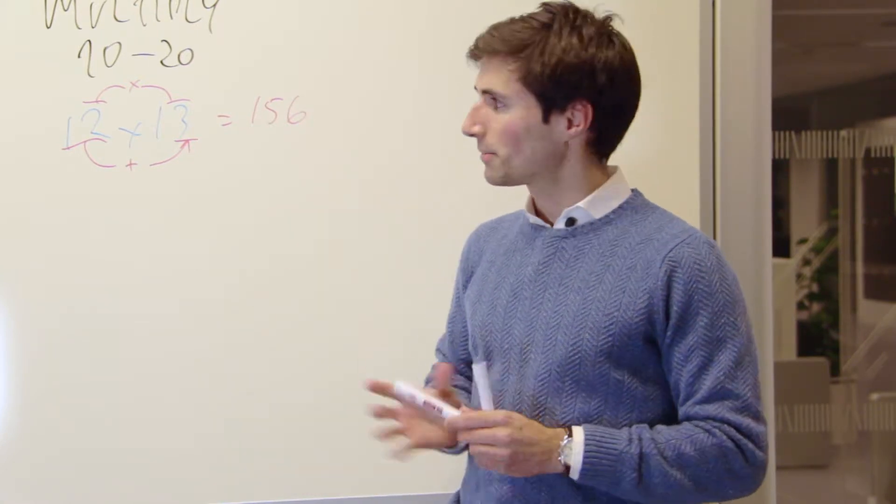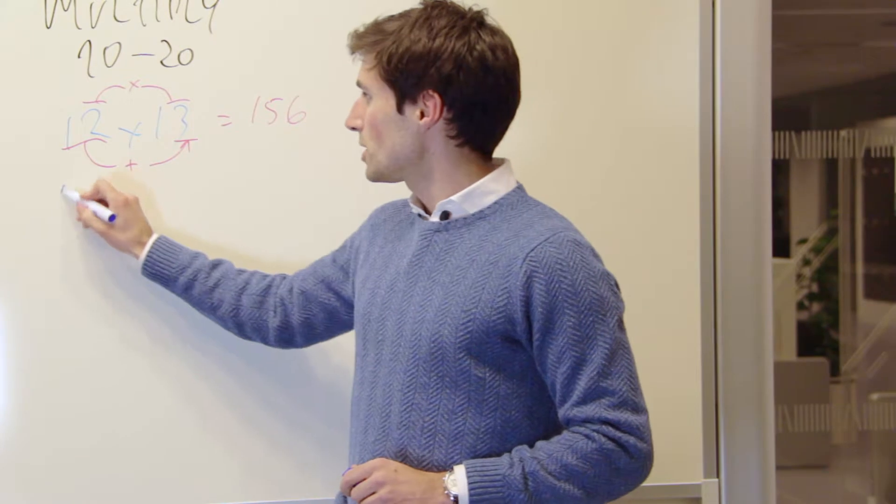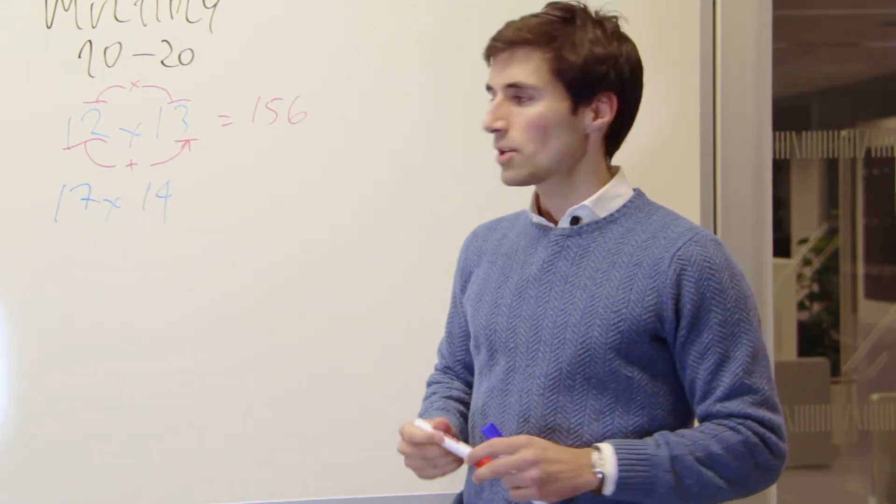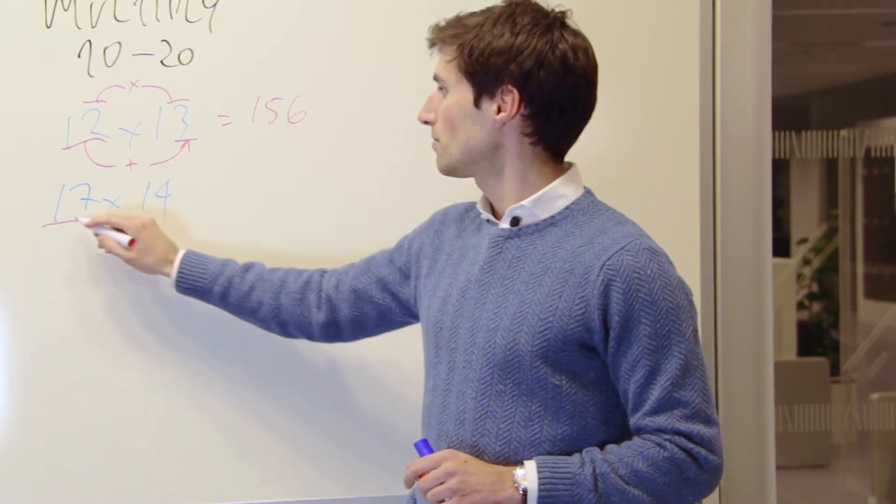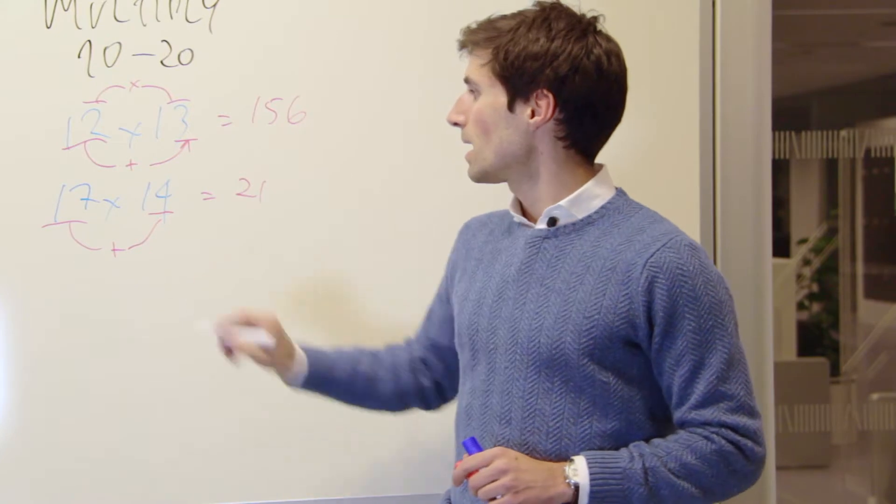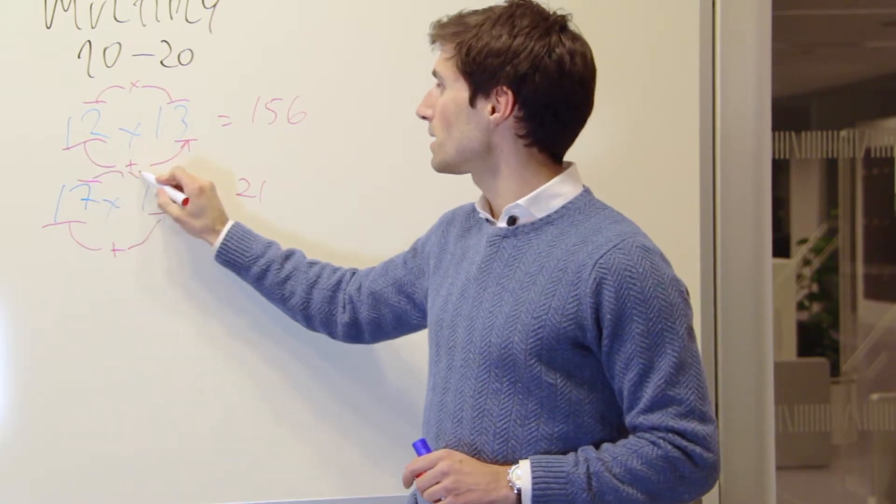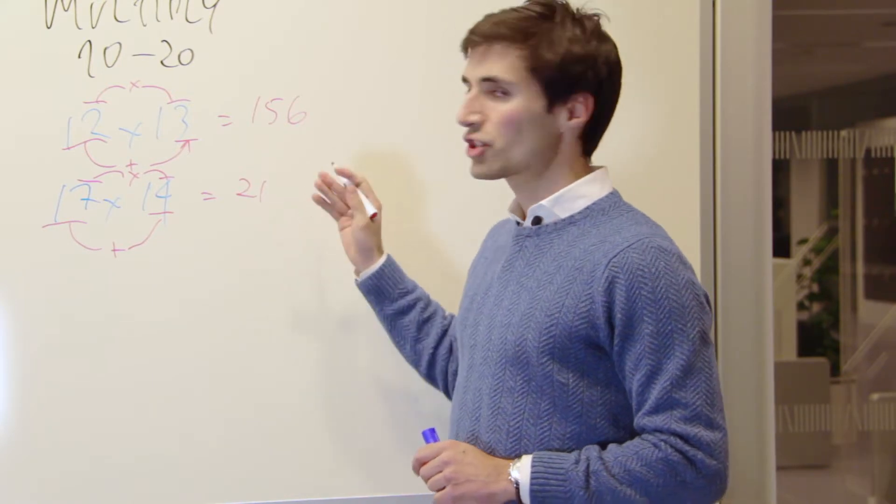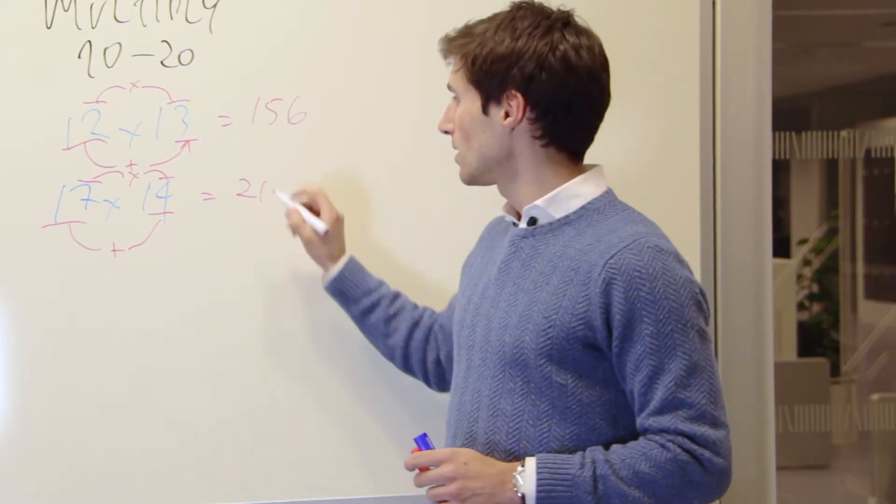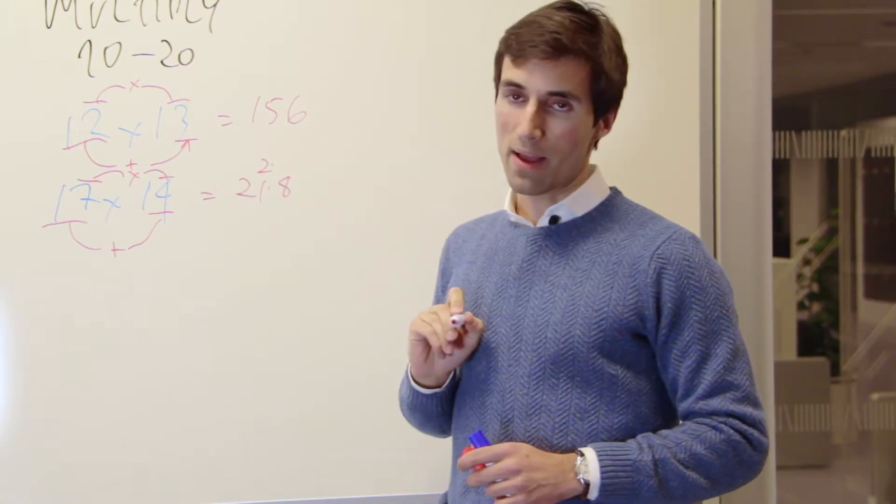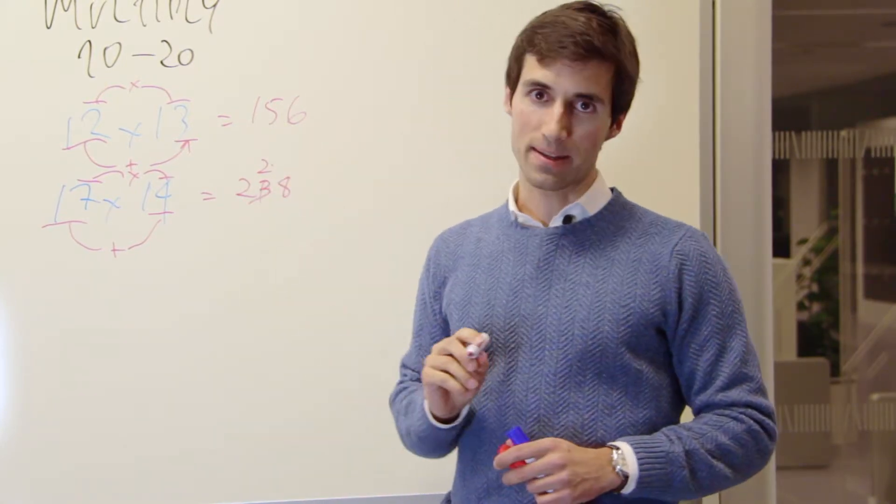Let's go over another example. 17 times 14. So, pick 17 and add 4. You get 21. And then pick 7 and multiply by 4. You get 28. In this case, 28, because it's bigger than 10, you need to add 2 and 1 together. So, you get 238.